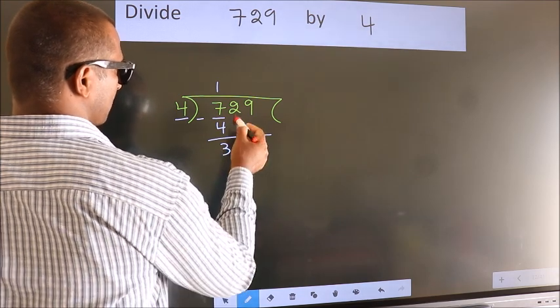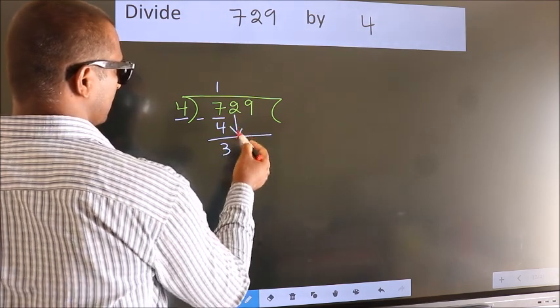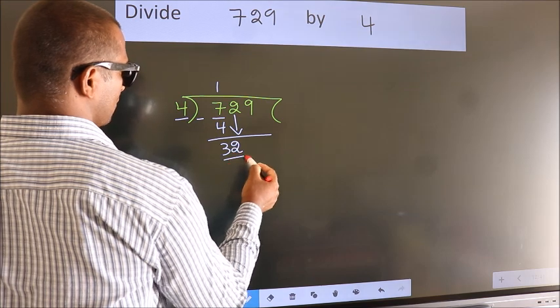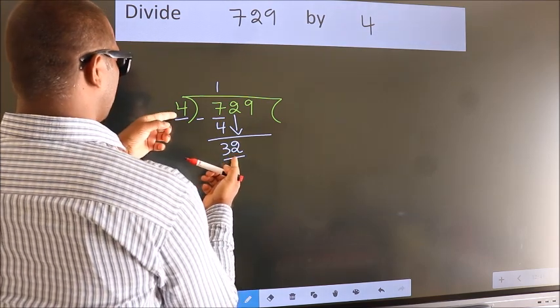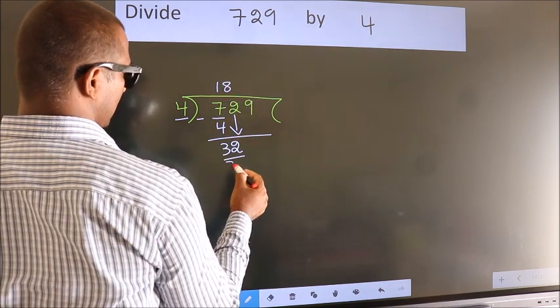After this, bring down the beside number. So, 2 down. So, 32. When do we get 32 in 4 table? 4 eights, 32.